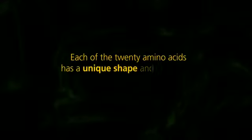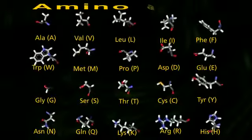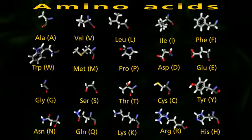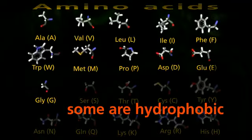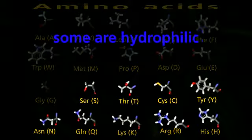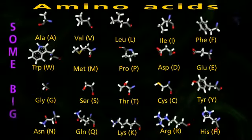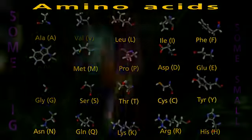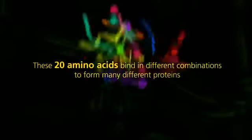Each of the 20 amino acids has a unique shape and chemistry. Some are hydrophobic, some are hydrophilic. Some are big and some are small. These 20 amino acids bind in different combinations to form many different proteins.